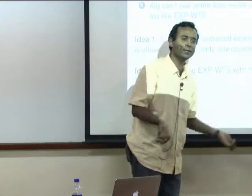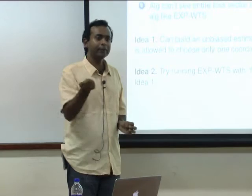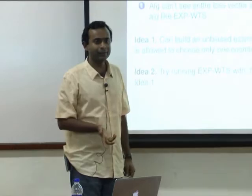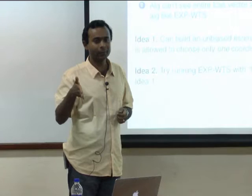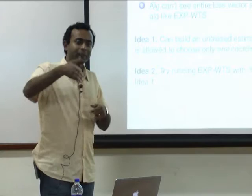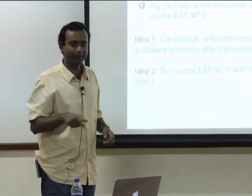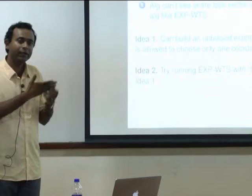The idea behind building an estimate of the entire vector is as follows. Suppose you have 10 coordinates and you can only sample one. Start with a uniform distribution across the 10 coordinates. Sample any one coordinate randomly with probability 1/10. When you get the value of that coordinate, just multiply it by 10. The estimate of the vector you return is 0 in all the other coordinates where you didn't sample, and 10 times the value in the coordinate you sampled. This actually gives you an unbiased estimate of the entire vector — because each coordinate will be sampled with probability 1/10, so the expected value still turns out to be the actual value of the coordinate.